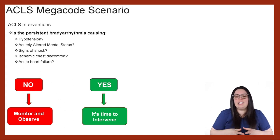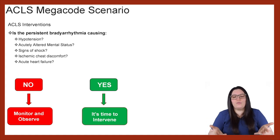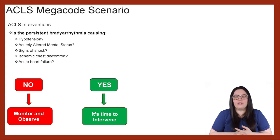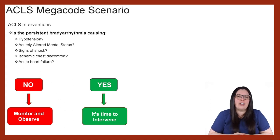Why are the extremities suddenly starting to become cold? As perfusion is decreasing and bradycardia limits the trajectory of circulating blood, the body begins to shunt the oxygen it has readily available to those vital life-saving organs such as our brain, heart, lungs, and kidneys. This affects the perfusion to the extremities, so you're also going to note that the patient's skin is going to start to look ashen. Yes, absolutely — in this patient scenario, the patient is exhibiting shock.